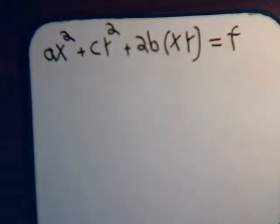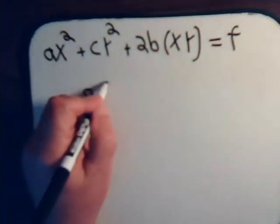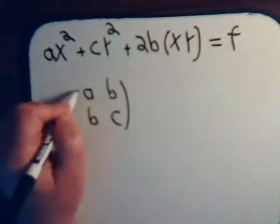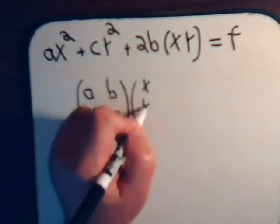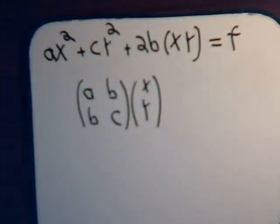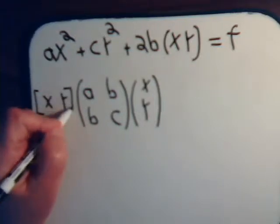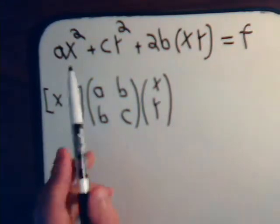If it's in that form, then this equation can be written like this. It's a matrix A, B, B, C times the column vector xy and also times the row vector xy. Remember, whenever you multiply a matrix by a row vector, it's always done on the left. And this, as we'll see in just a moment, is the same as this.